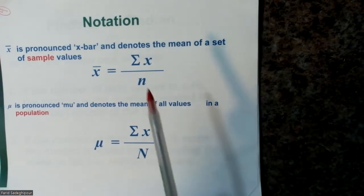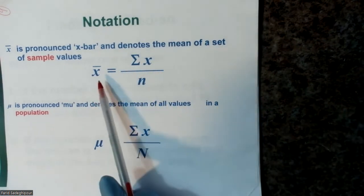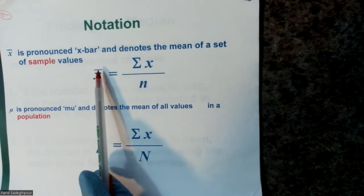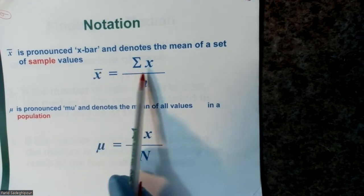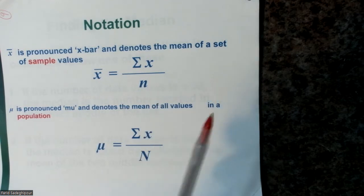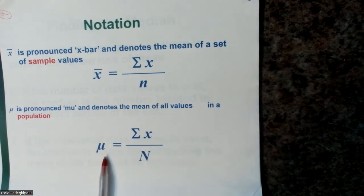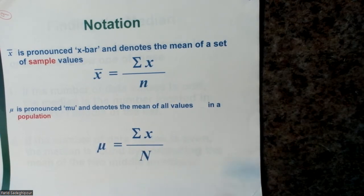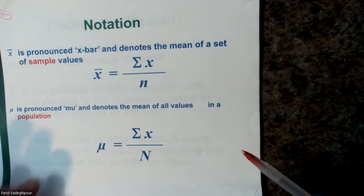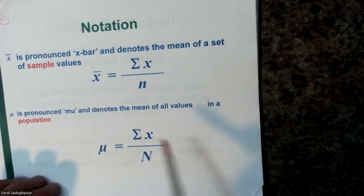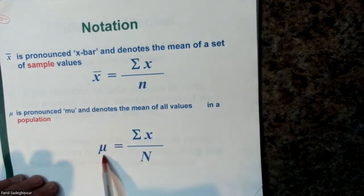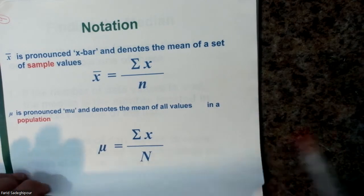One disadvantage is that the mean is very sensitive to every data value — one extreme value can affect it dramatically, so it is not a resistant measure of center. The sample mean is written as x-bar, which equals the sum of x divided by n. For the population, the symbol is mu, which is the sum of all variables divided by N.